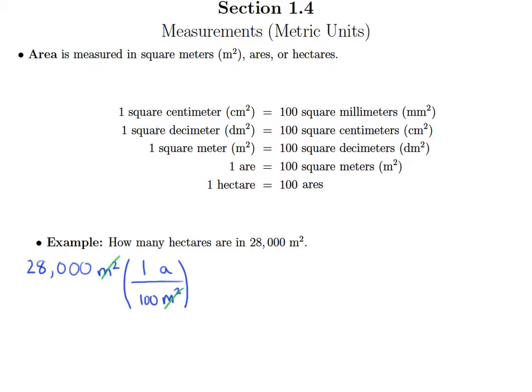Now I need to go from ares to hectares. So I need ares on the bottom so they cancel, and hectares on top. I know that there are 100 ares in one hectare.